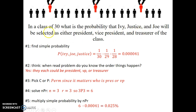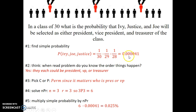Here's another example: in a class of 30, what's the probability that Ivy, Justice, and Joe will be selected as either president, vice president, or treasurer? Let's start by finding the simple probability. The probability of getting Ivy first - she's one out of 30. Joe is one out of 29 people remaining, and Justice is one out of 28. The probability of that is quite small. That's the simple probability of picking those three people.